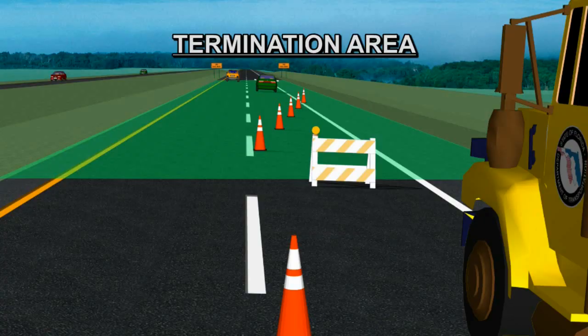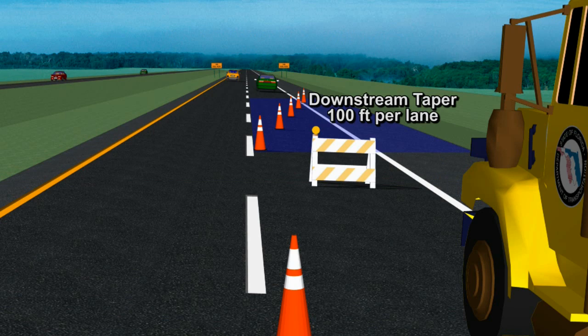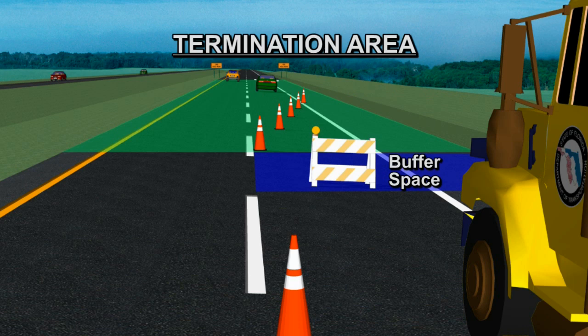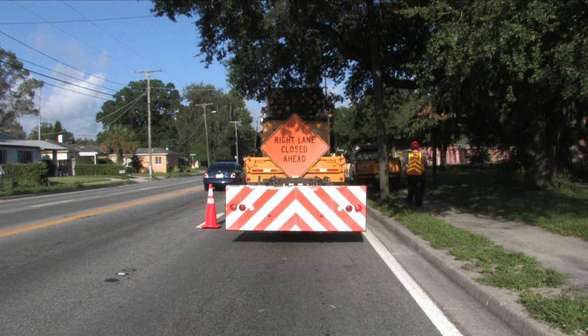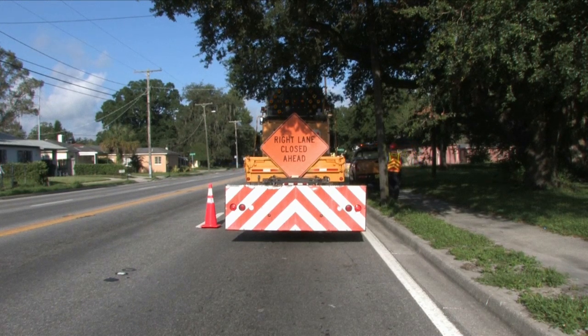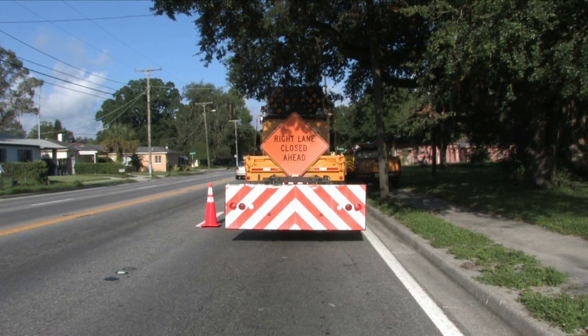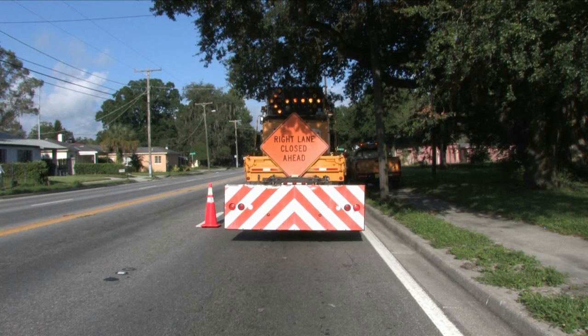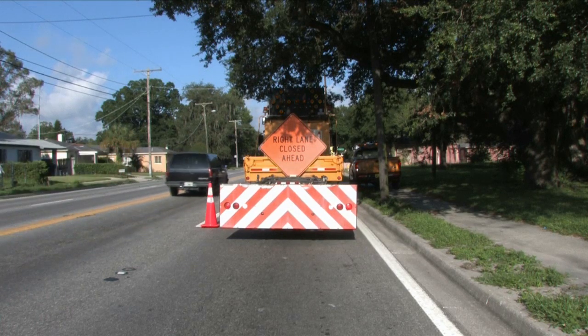The termination area provides a short distance for traffic to clear the workspace and to return to the normal traffic lane. It extends from the downstream end of the workspace to the end roadwork sign. A downstream taper may be placed at the termination area. A buffer space may also be used between the workspace and the beginning of the downstream taper. For some work operations, such as a single-location utility or maintenance repair, it may not be necessary to display an end roadwork sign because it will be obvious to drivers that they've passed the workspace.